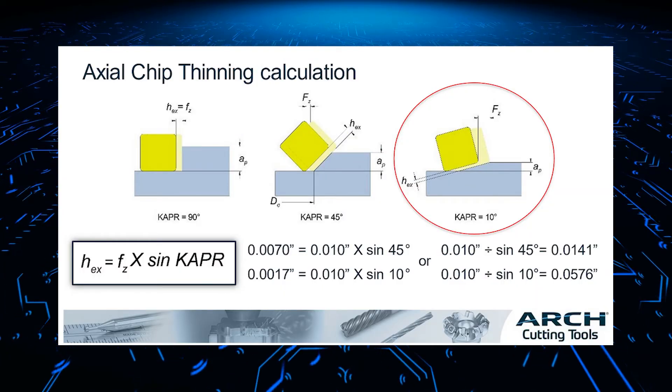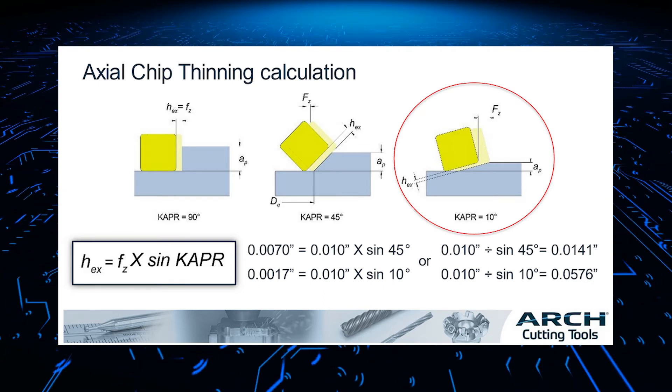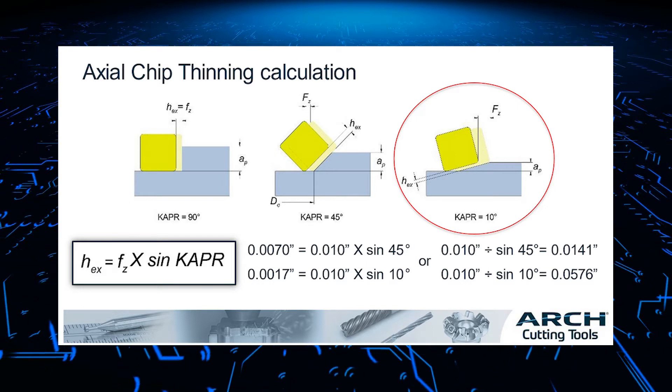Axial chip thinning calculation. This 10 degree PM3, highlighted in the red circle, needs 57 thousandths of an inch feed rate per tooth to produce a 10 thousandth of an inch chip load.